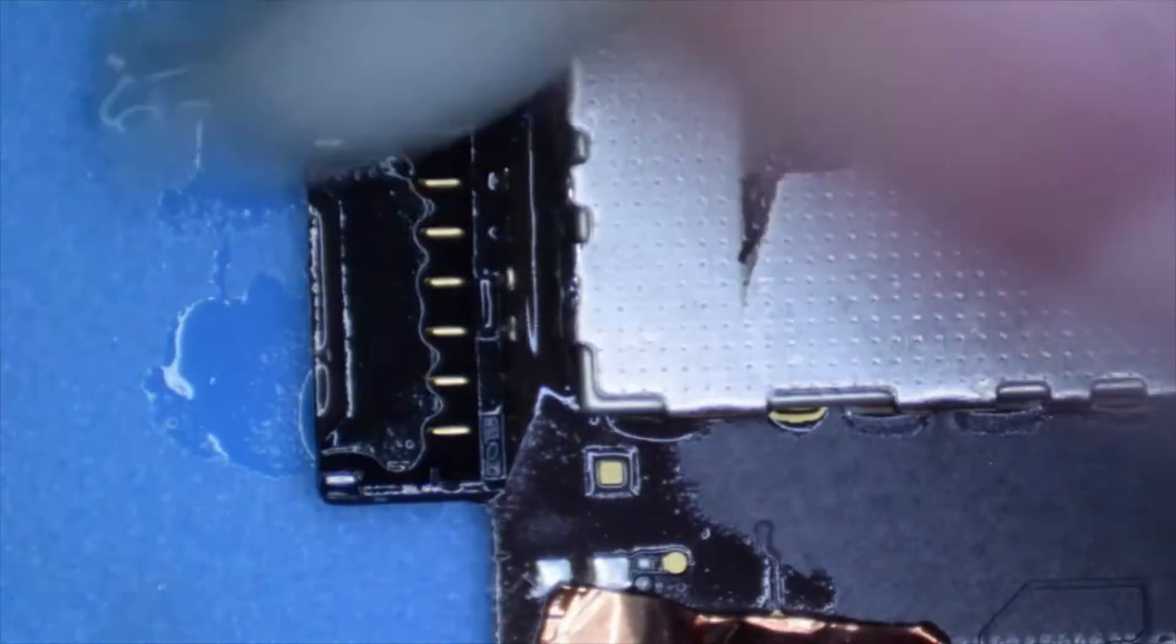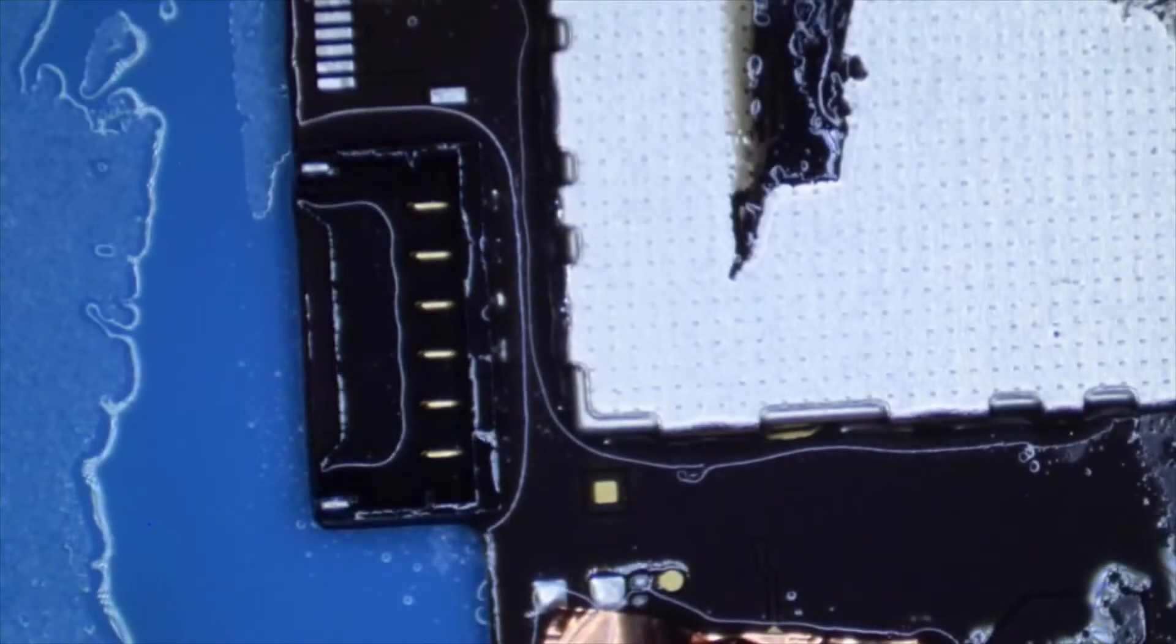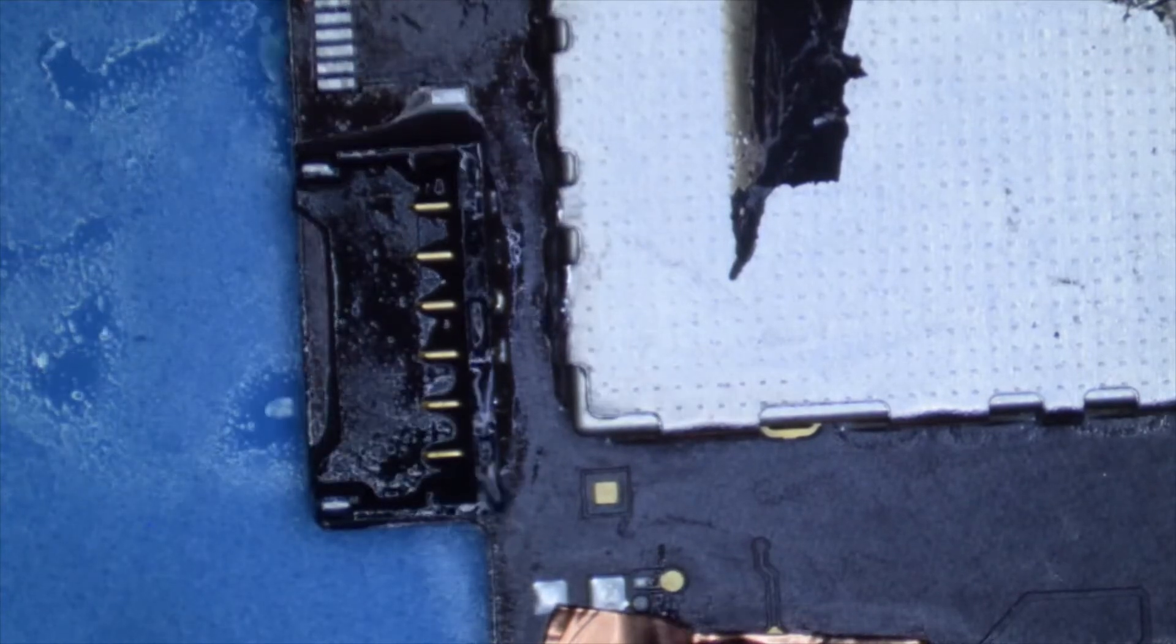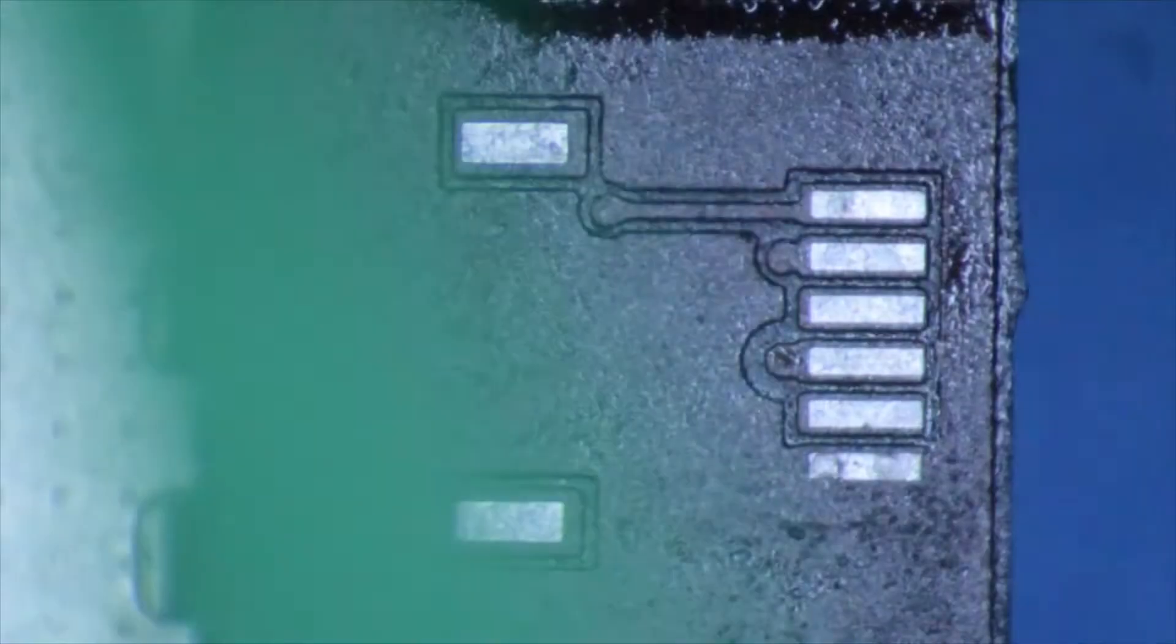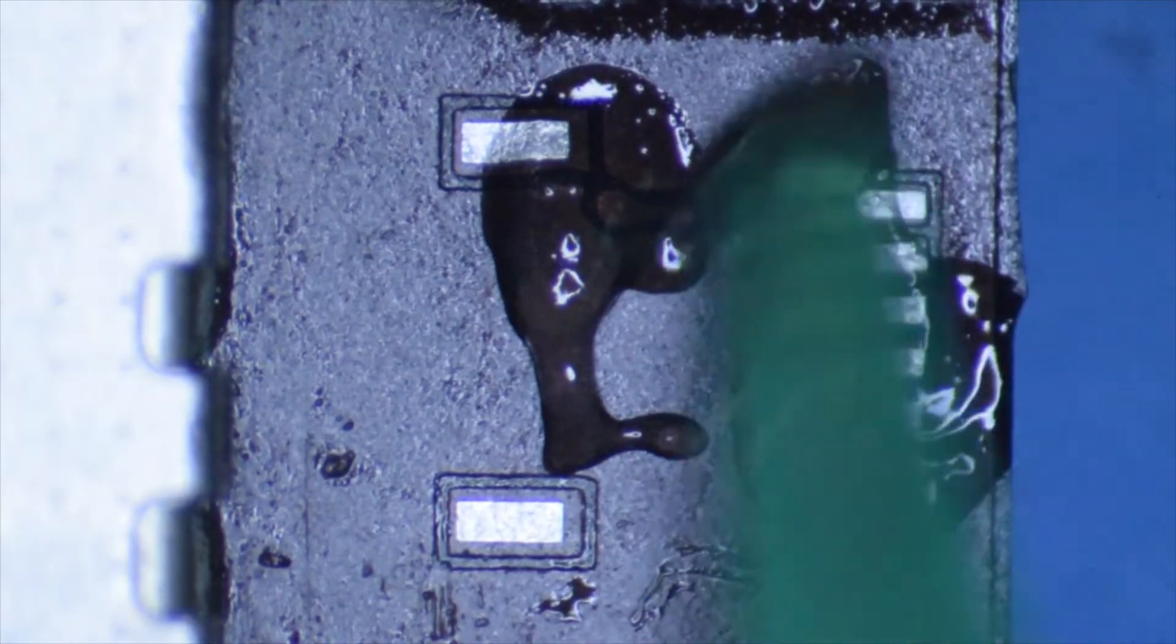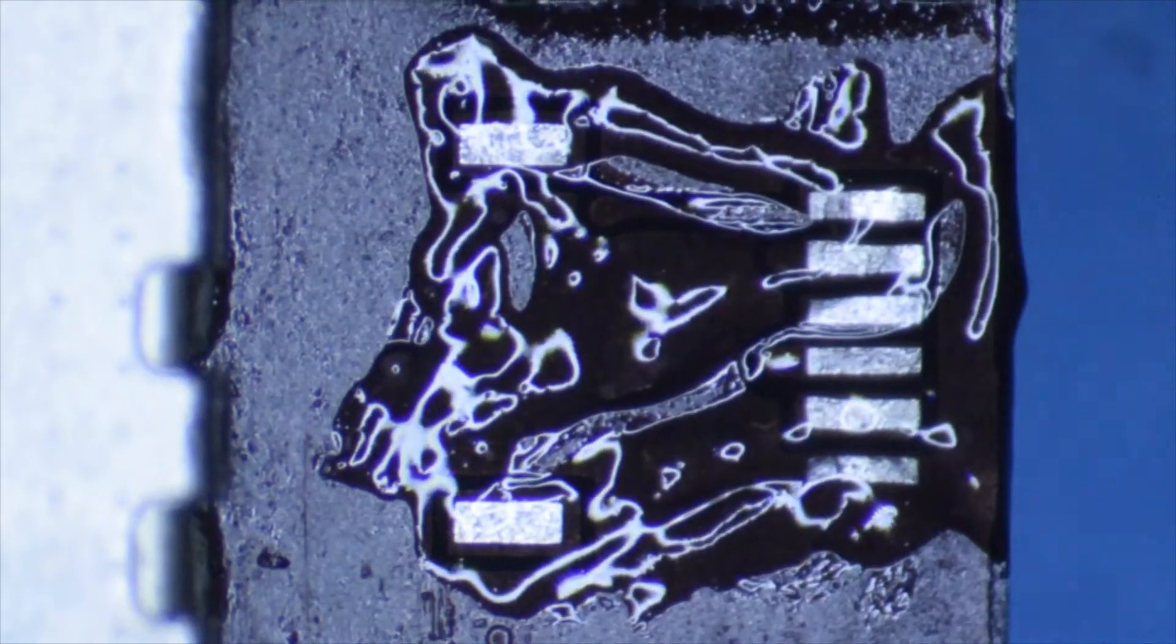All right. So that's looking good. We'll go ahead and clean up this area, and then we will move on to the next step. All right, so it is time to put our home button connector down. So once again, I will apply some flux on the clean surface, but we're going to apply this from the top.